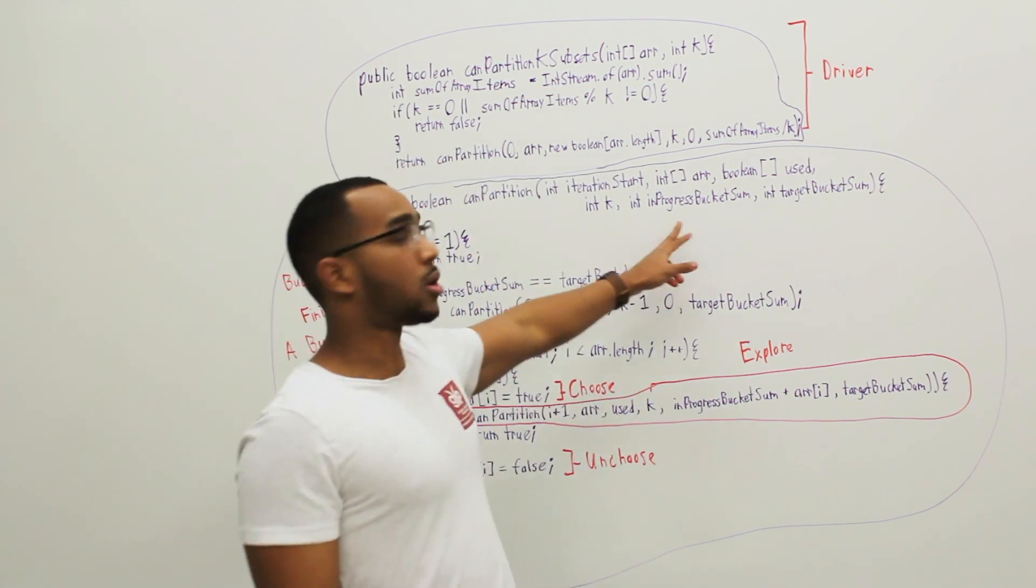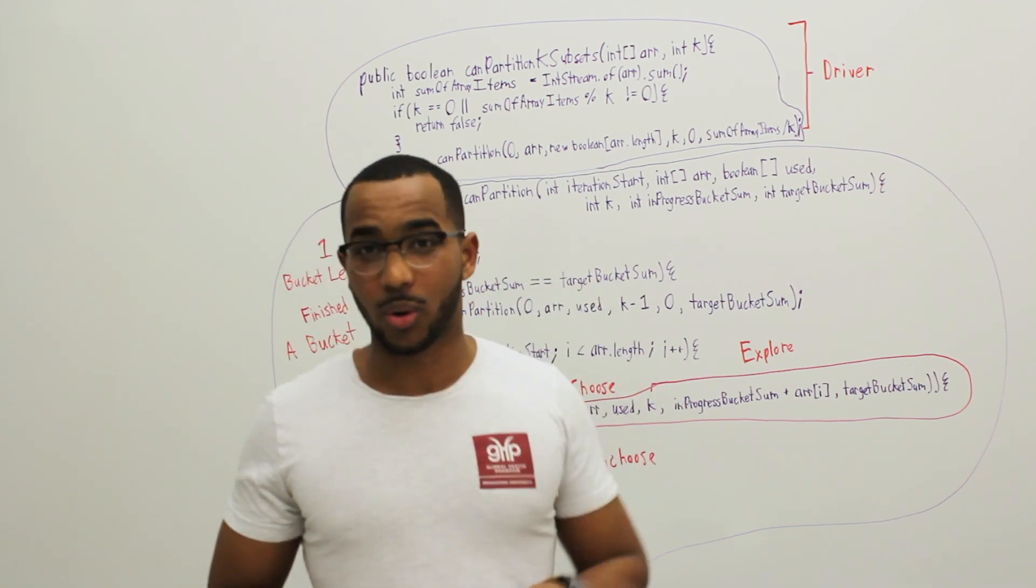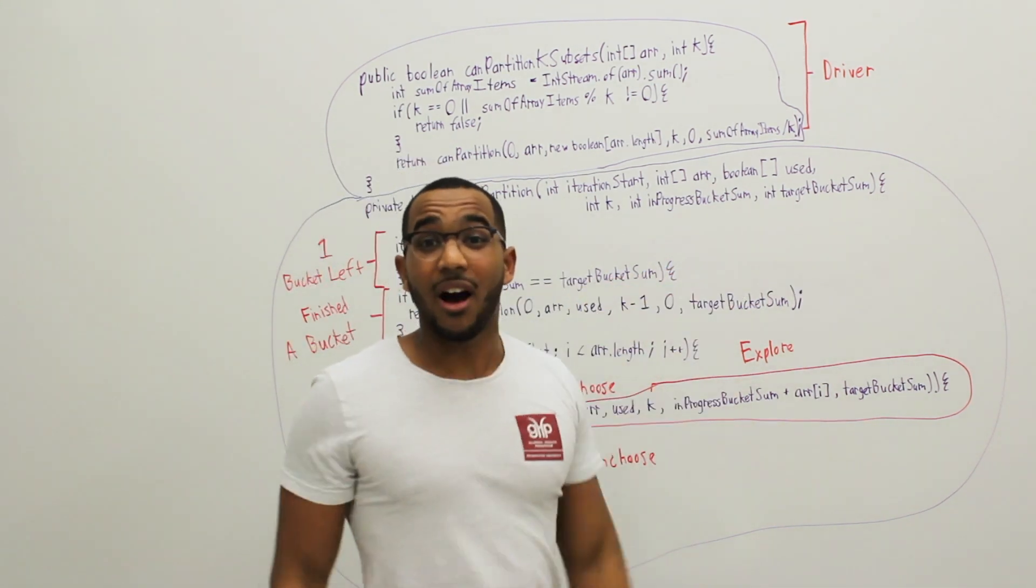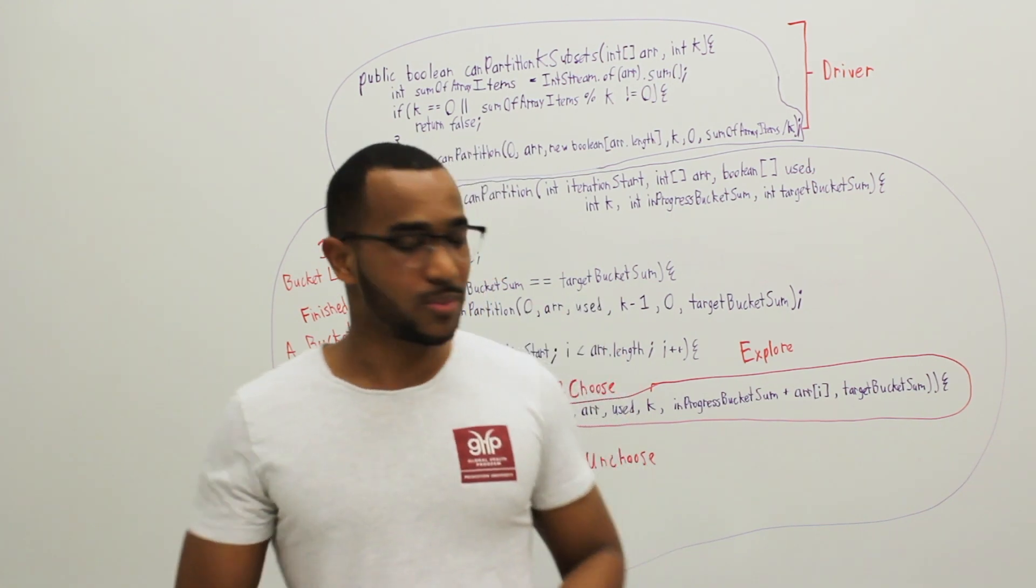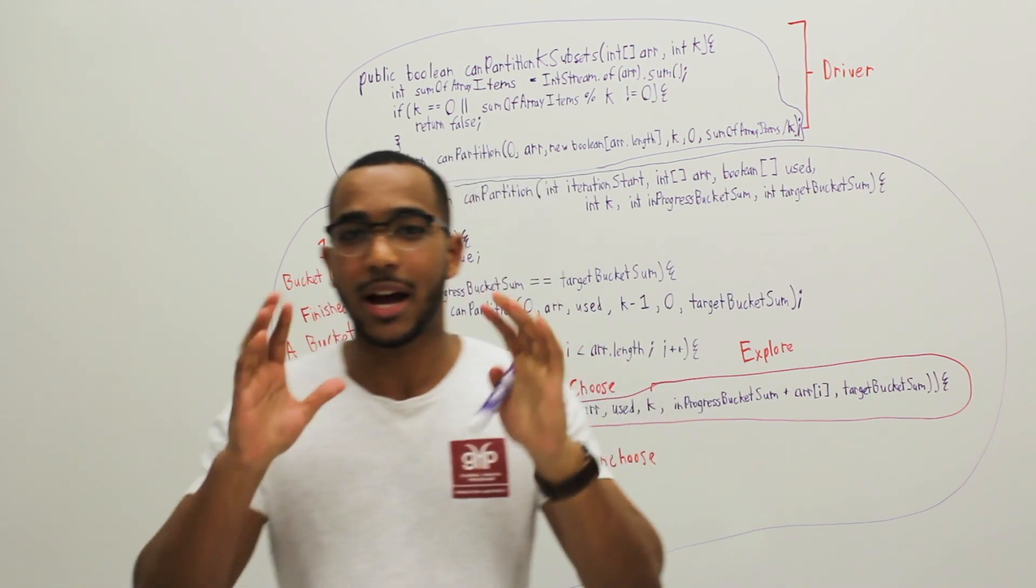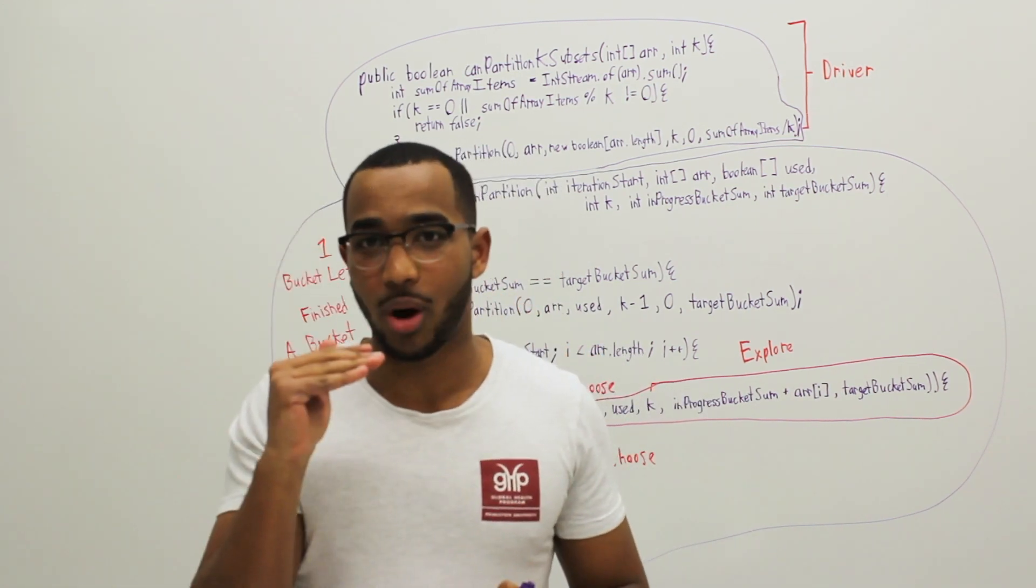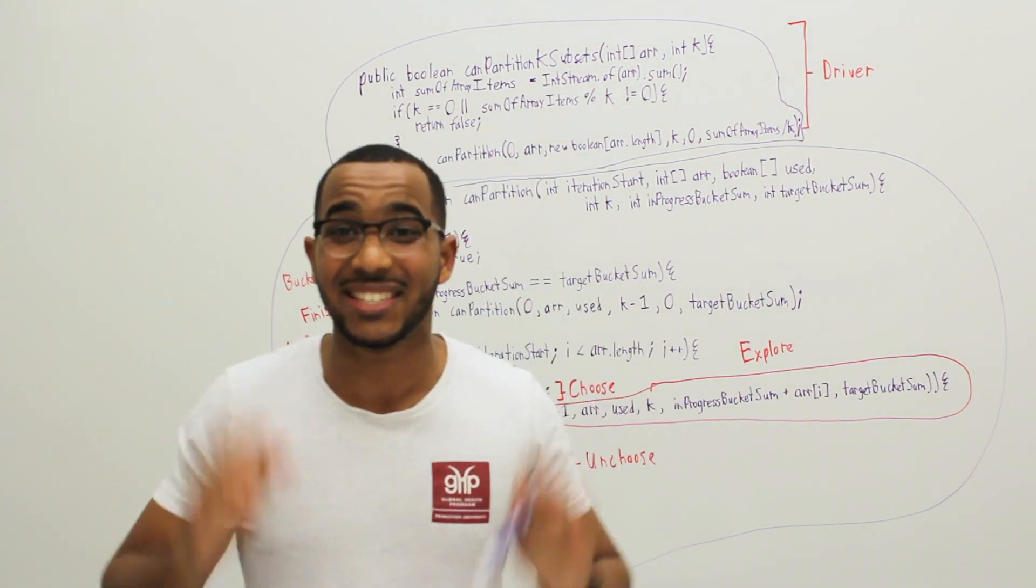We have to use all of the items and we cannot use a single item more than once. We must know what is used. Also, we keep track of the sum of the current bucket we are working on. And we keep track of the target sum we want a single bucket to sum to. So if k equals 1, what we're going to do is do our recursion. Each time we fill a bucket, we reduce k by 1 and keep the target sum per bucket the same.